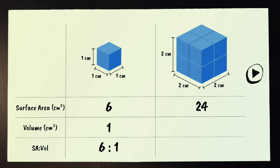If we do the same for the larger cube, we can see that it has a volume of two times two times two, which equals eight centimeters cubed. This ratio of 24 square centimeters of surface area to every eight cubic centimeters of volume can be simplified to three to one. Six to one is bigger than three to one. The smaller cube has a larger surface area to volume ratio.